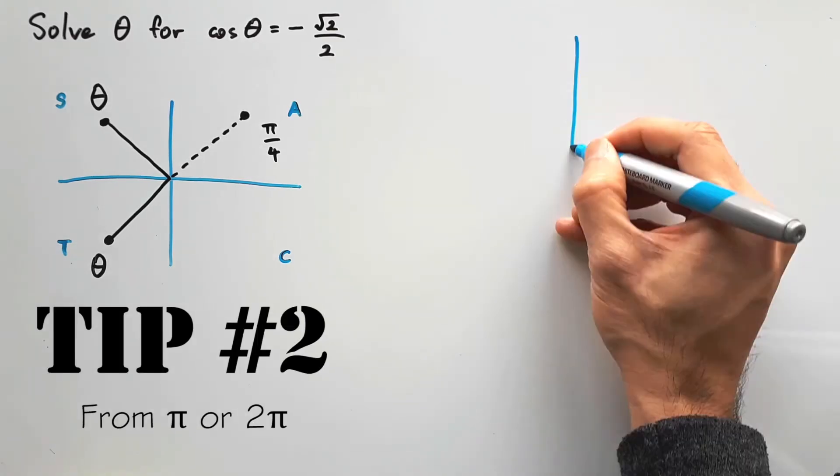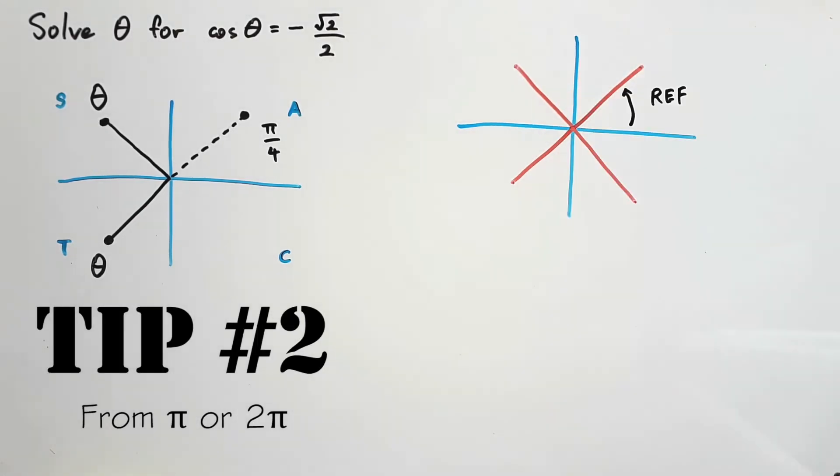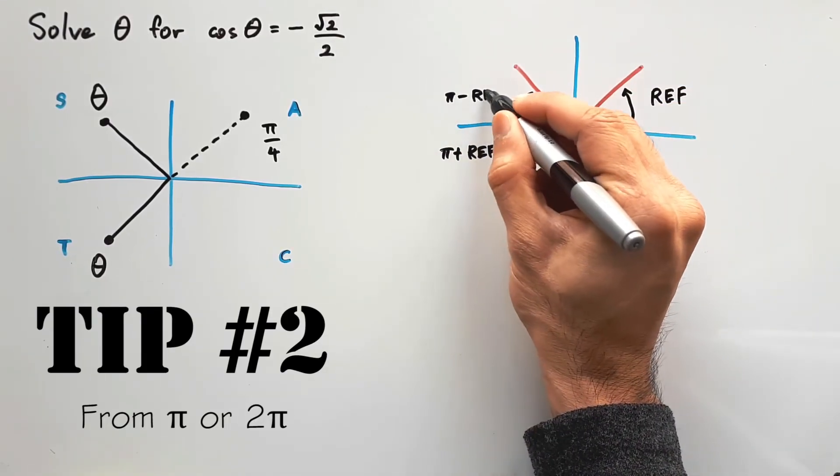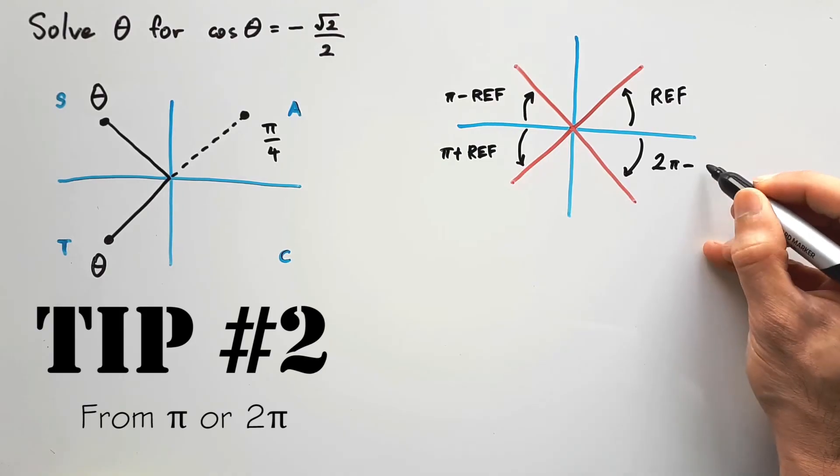Tip number 2: Once you have the reference angle, add or minus it from π for the second or third quadrant, and minus it from 2π for the fourth quadrant.